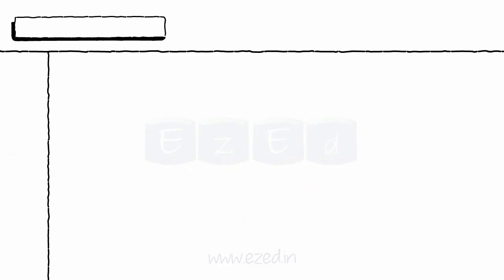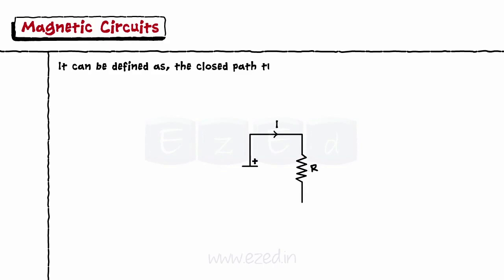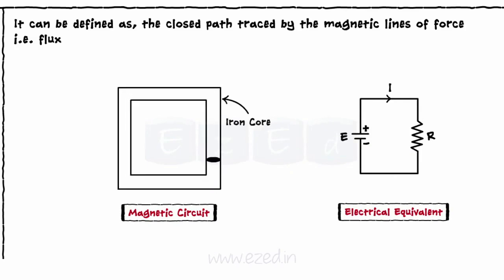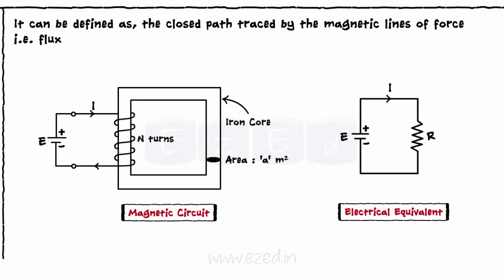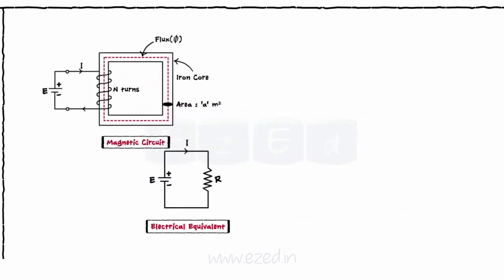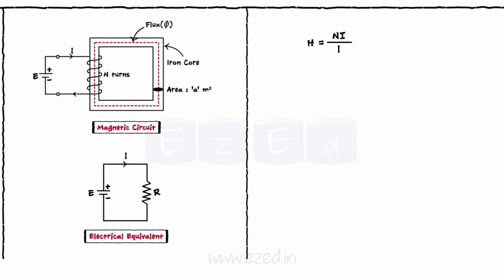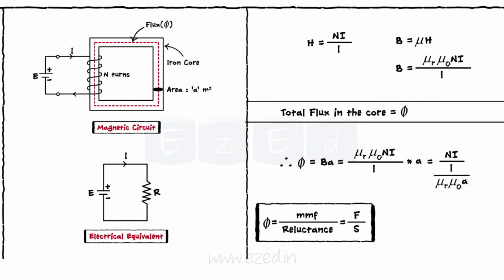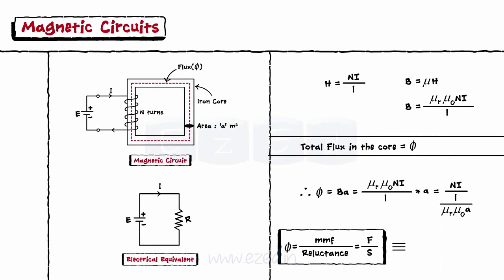Similar to electric circuits, we have magnetic circuits too. It can be defined as the closed path traced by the magnetic lines of force, that is flux. Consider the magnetic circuit consisting of an iron core with cross-sectional area A meter square and mean length L meters. A coil of N turns is wound on one of the sides of the square core, which is excited by the supply. This supply drives the current I into the coil and the coil produces the flux phi. The magnetic field strength is given by H and the flux density is given by B. The total flux phi can be calculated as the product of flux density and the cross-sectional area. Substituting the values, phi equals the ratio of MMF to the reluctance, similar to the expression of current in an electric circuit.